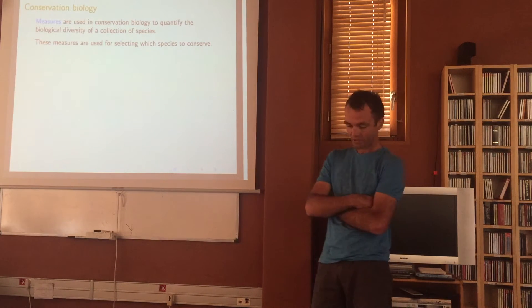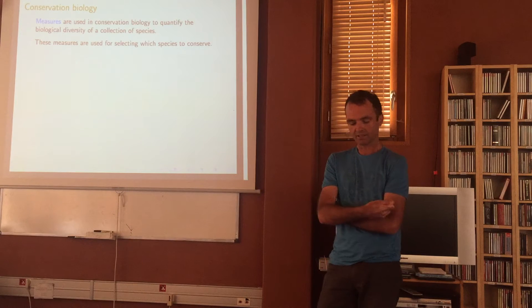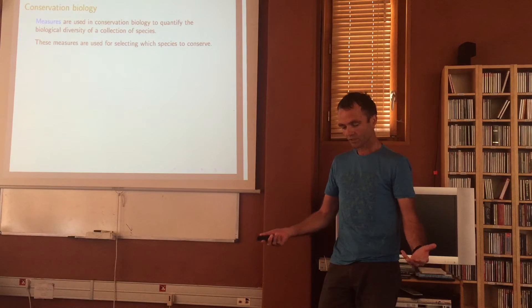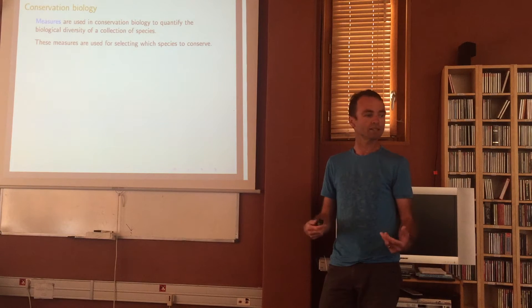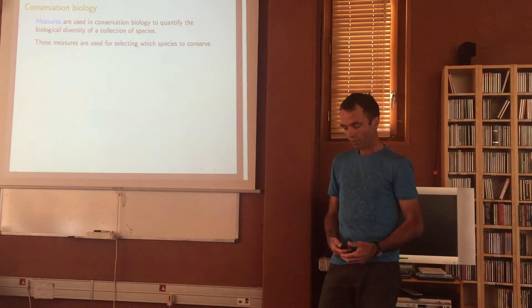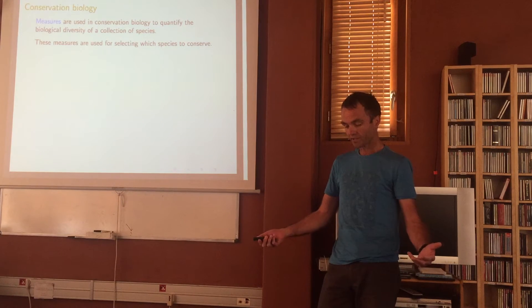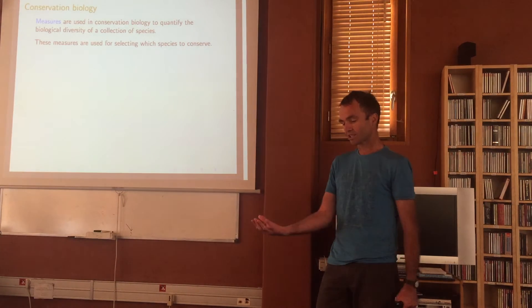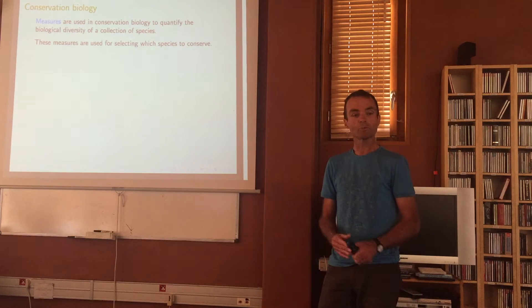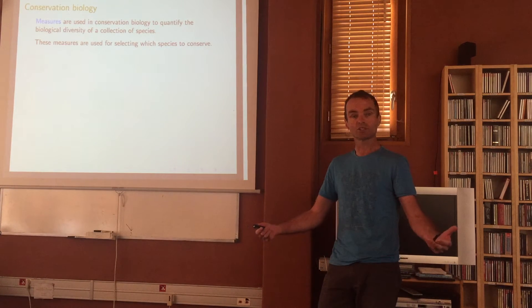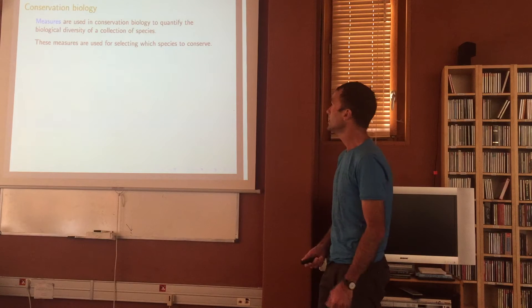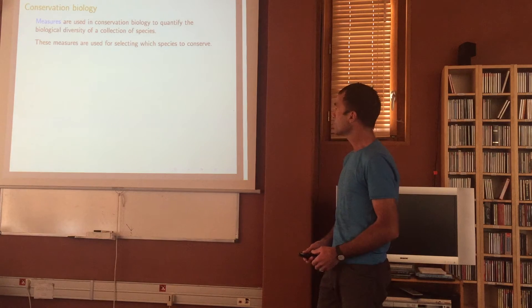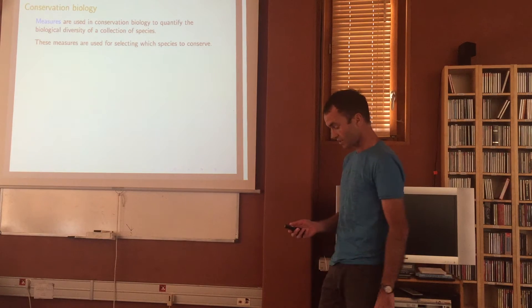In conservation biology, they want some measure to justify conserving species as they go extinct. They want some sort of measure about the biodiversity of a collection of species — whether to do with extinction and conservation, or just about what is the biodiversity of a collection of species, how diverse they are. They want some measure for deciding that.